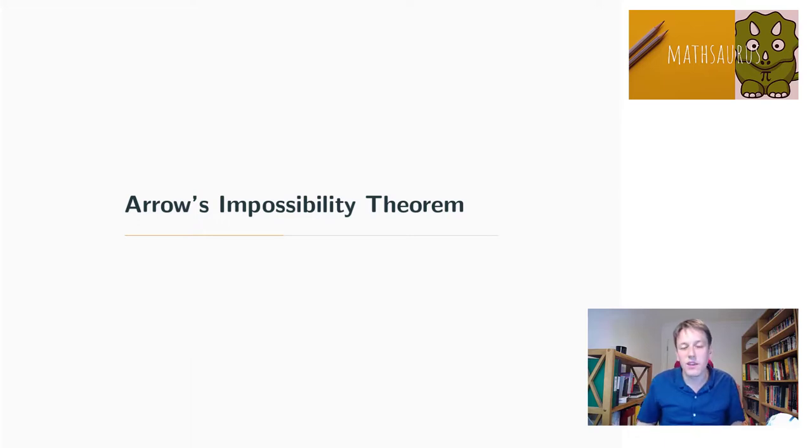I'm going to pause here and do a second video where we look at Arrow's impossibility theorem. This is a theorem that effectively says there are limits on any voting system — however well you design it, it can't satisfy a couple of fairly simple criteria unless it's a dictatorship where one person can control all of the voting. I'll explain that in the next video. Do put something in the comments below if you have any questions, and hopefully I'll see you for the second part very soon.